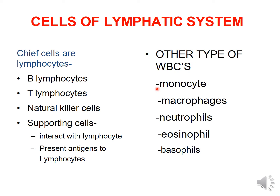The different types of cells in the lymphatic system: the chief cells are lymphocytes, which include B lymphocytes and T lymphocytes. There are also natural killer cells and supporting cells.